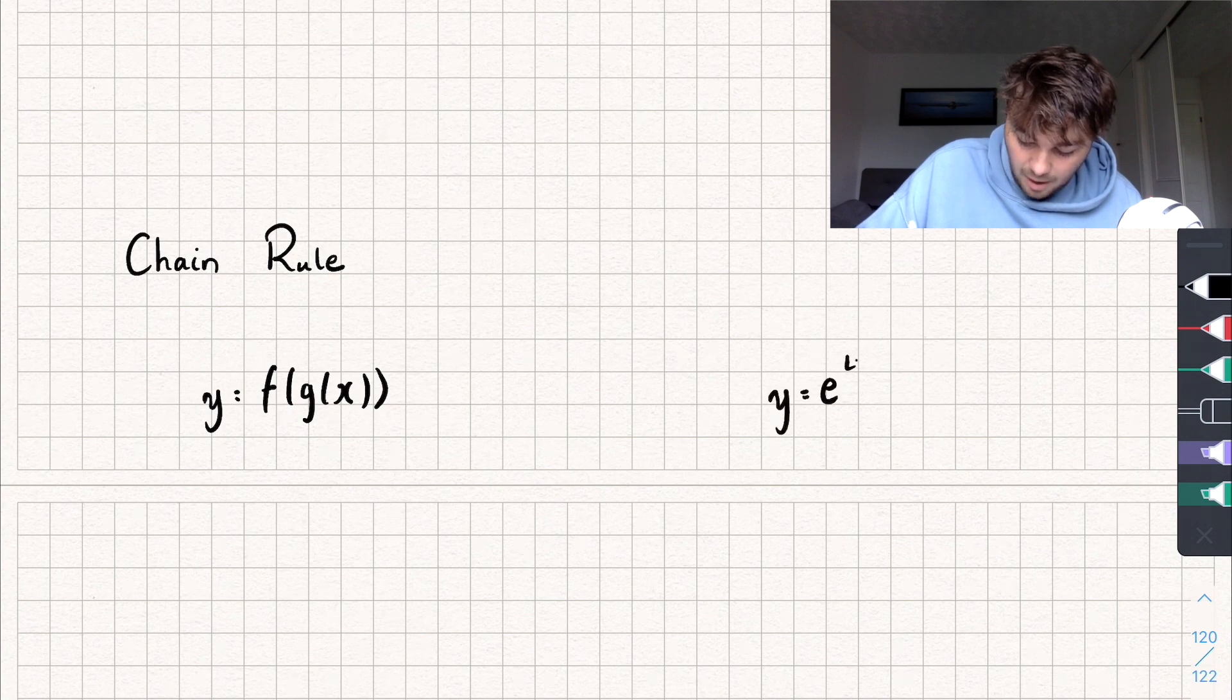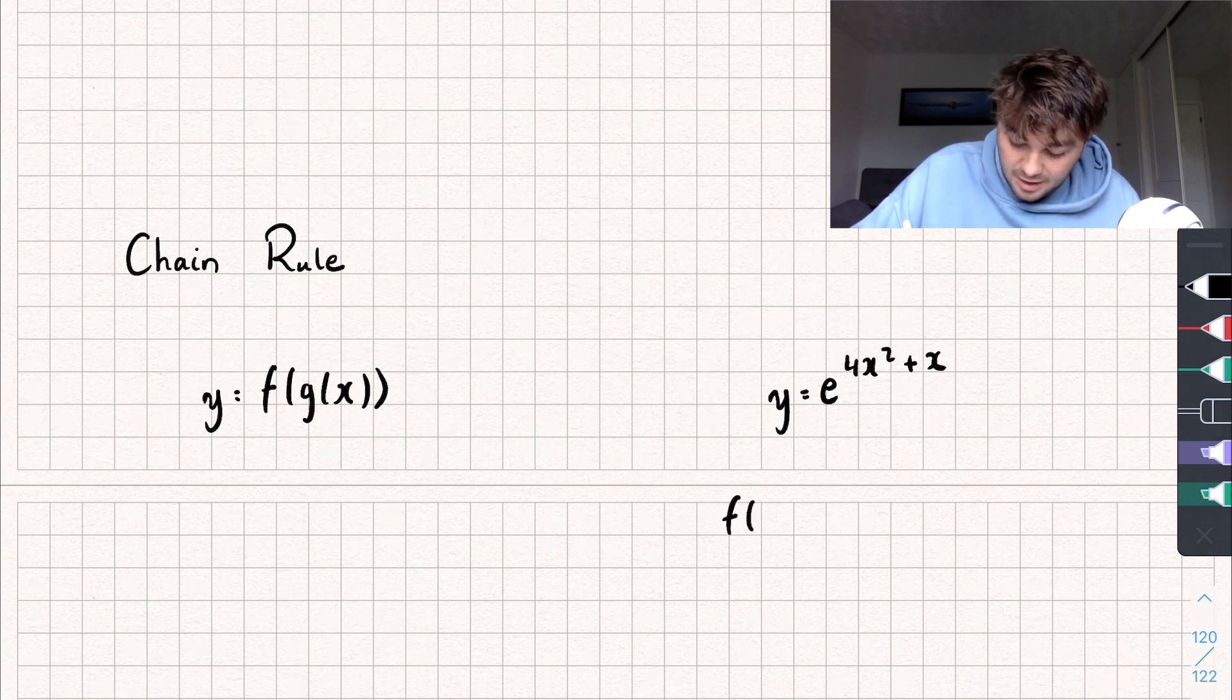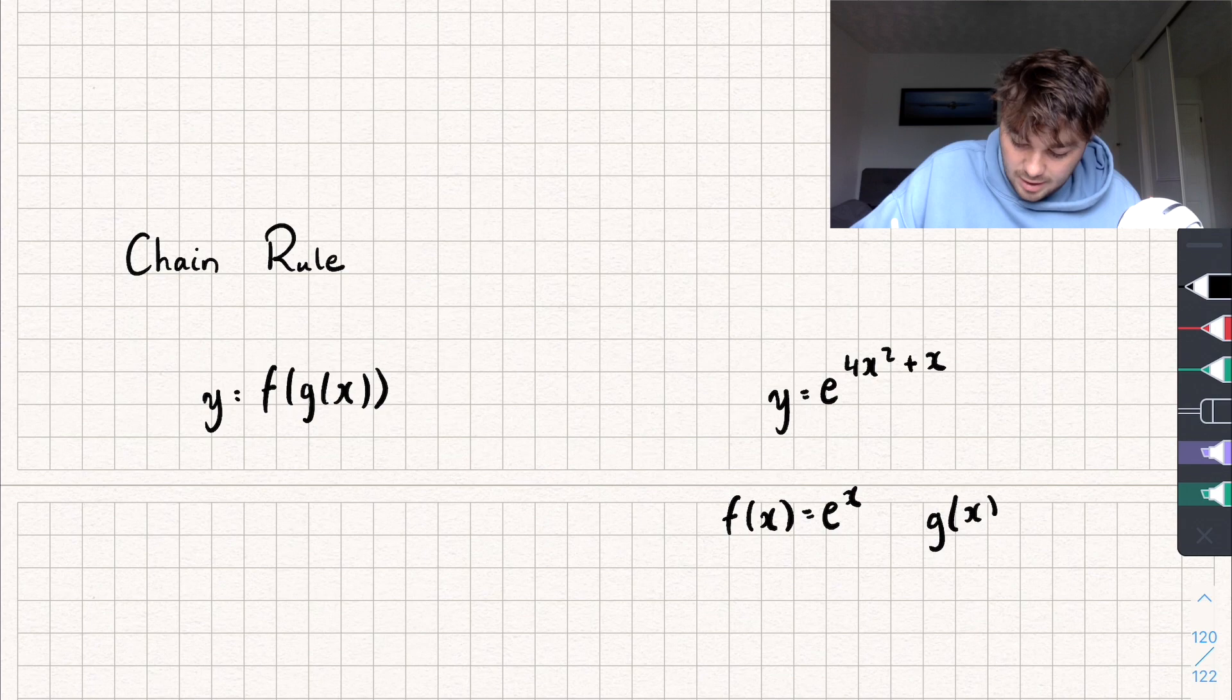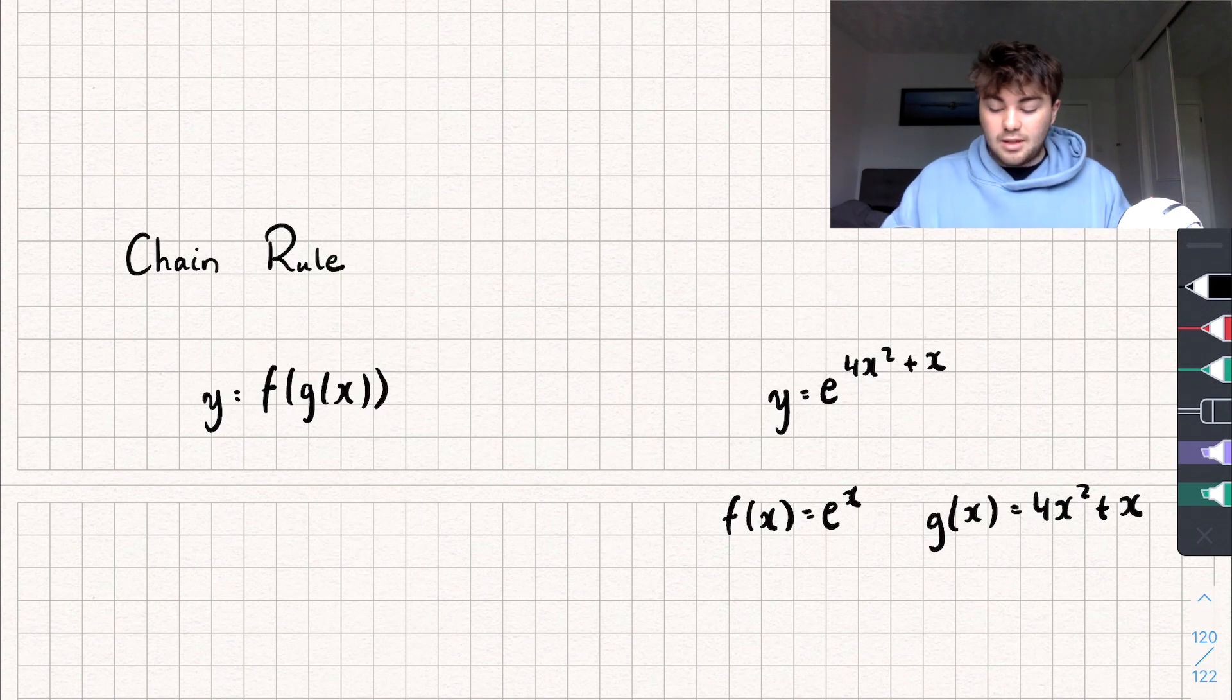y equals e to the power of 4x squared plus x. So we could have that the f of x is equal to e to the x, and our g of x is equal to 4x squared plus x. And so this will tell us how to take the derivative of something that looks like that.